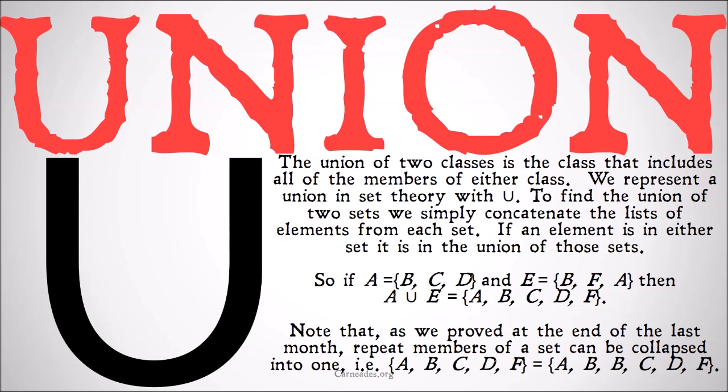So if our first set A has members B, C, and D, and E has members B, F, and A, then the union of A and E is A, B, C, D, and F. Note that, as we proved at the end of the last month, repeat members of a set can be collapsed into one.